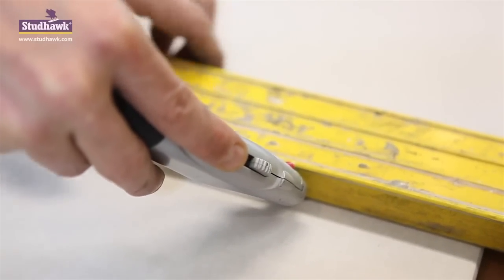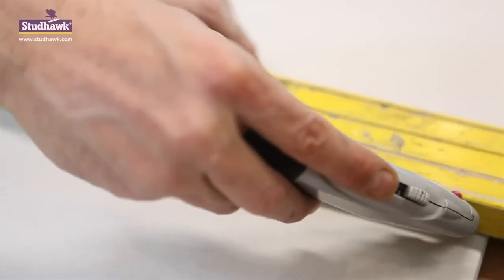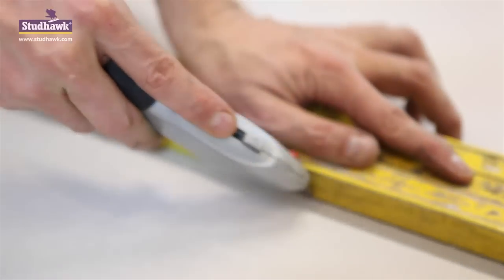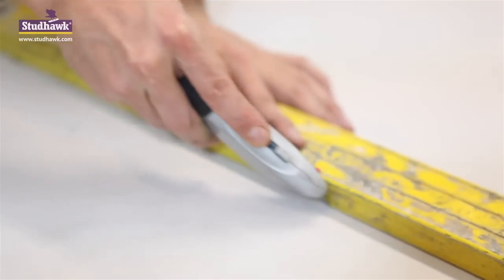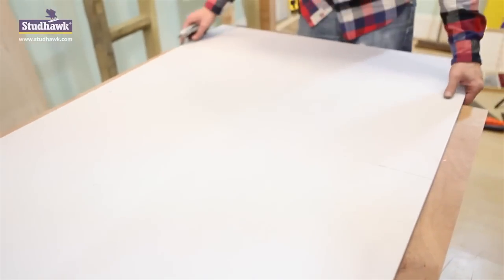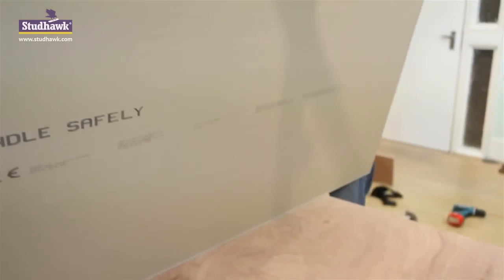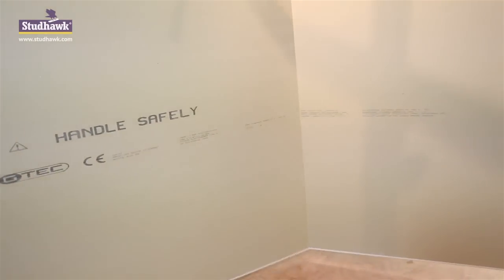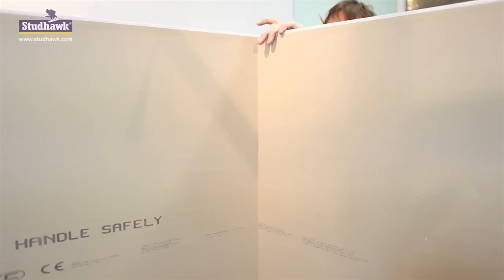We can mark with a pencil, align our level to the marks and score through the paper. Don't try to cut through the whole board, that's not the idea, you only need to score the paper. Open the crack and score down.